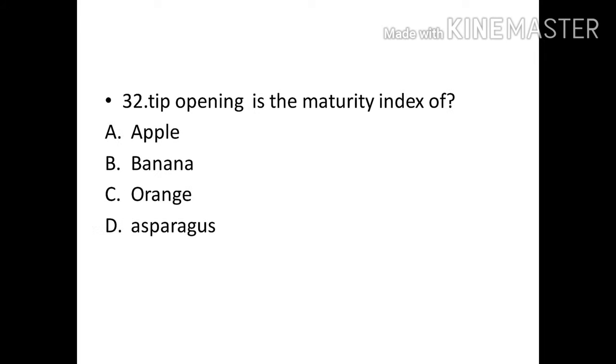Tip opening is the maturity index of? Options: Apple, Banana, Orange, Asparagus. Correct answer: Option D, Asparagus.